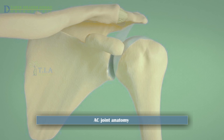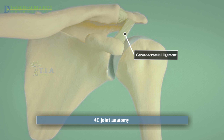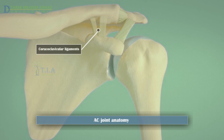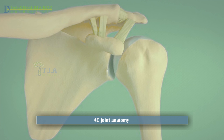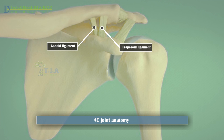The acromioclavicular ligament connects the collarbone to the acromion process. The coracoacromial ligament attaches the coracoid to the acromion. The coracoclavicular ligament connects the collarbone to the coracoid. It consists of two ligaments: the trapezoid ligament in front, and the conoid ligament behind.